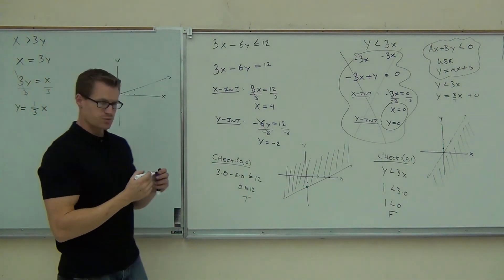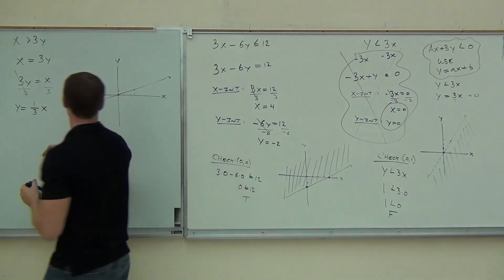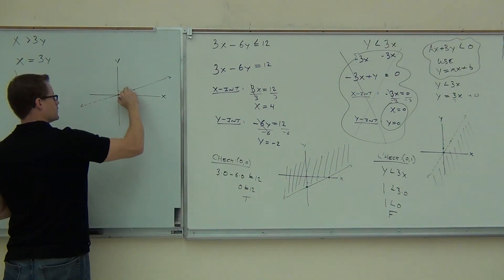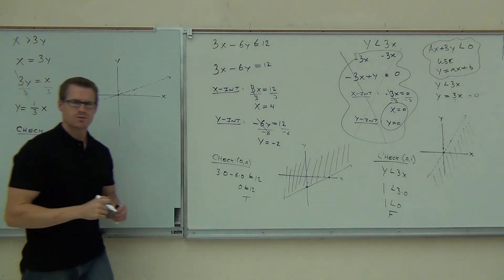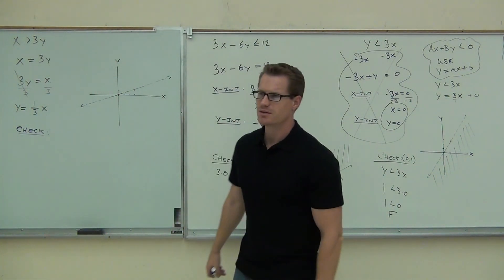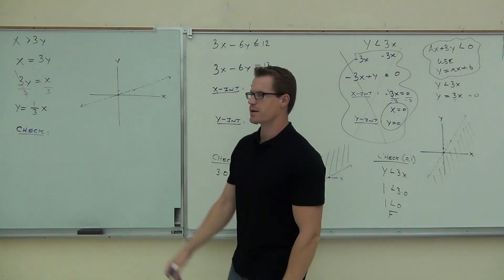Leave it solid, make it dashed. Which one? Definitely dashed. We have to also check a point, because we need to shade this thing. Are we going to check 0, 0? Hey, look at that. Are we going to check 0, 0? No. We can't. It's going right through there. We can't check that point.